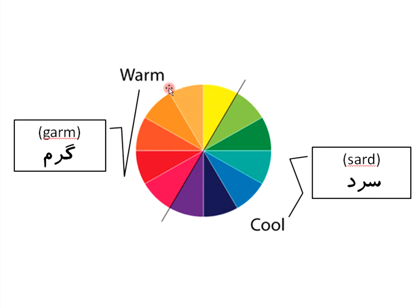Here you can see some colors that are called warm colors. In Persian we say garm. And cool or cold colors means sad.